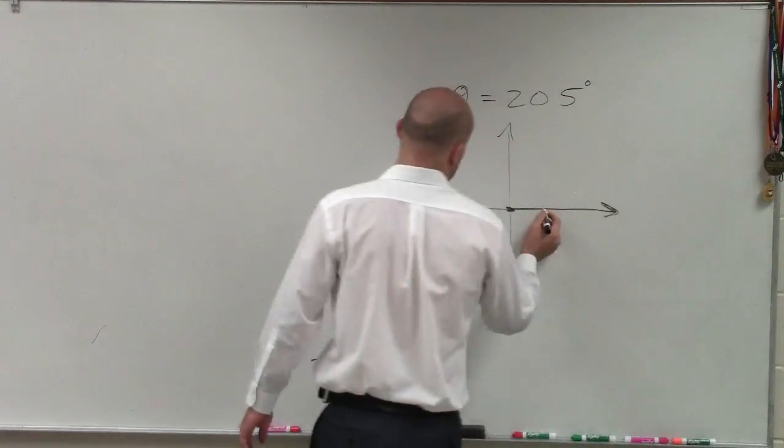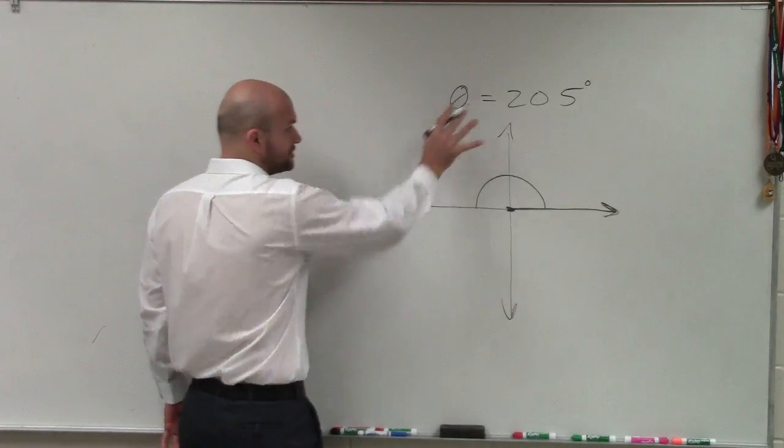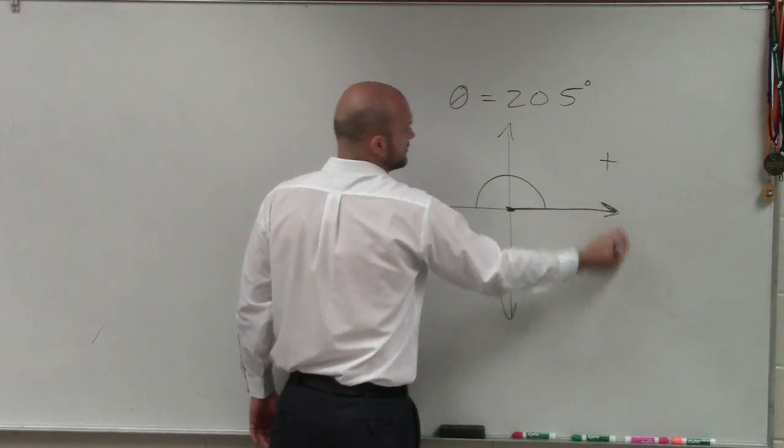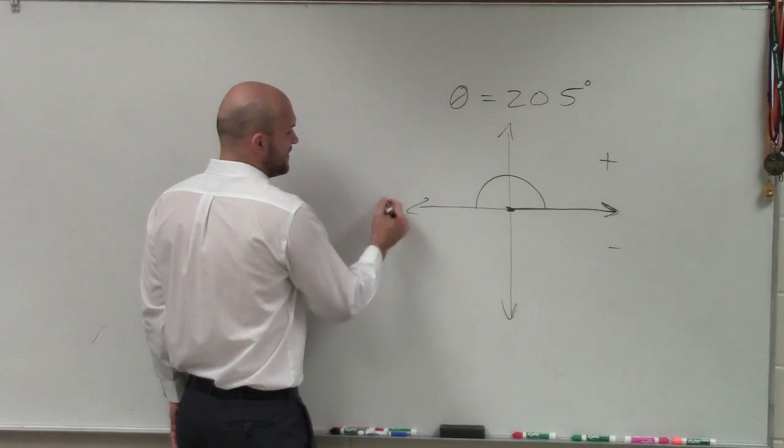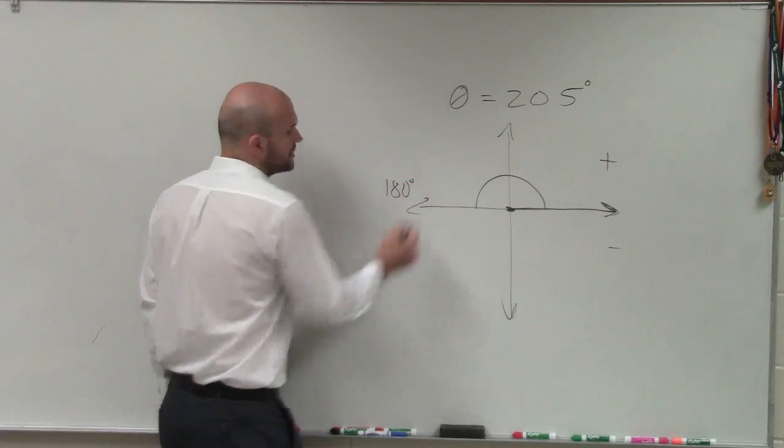Well, we know that if we rotate a ray halfway around the circle in degree form, since this is positive, counterclockwise is positive, clockwise is negative. So if I go halfway around the circle, that's 180 degrees.